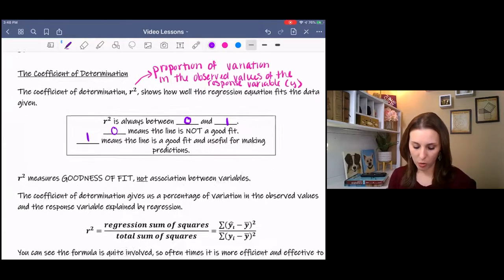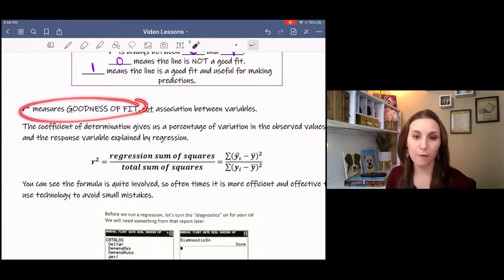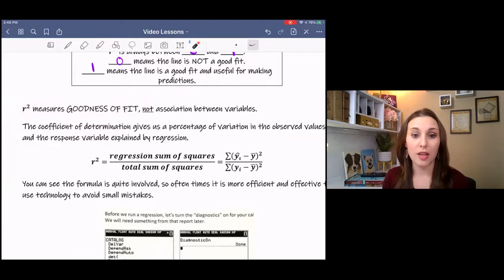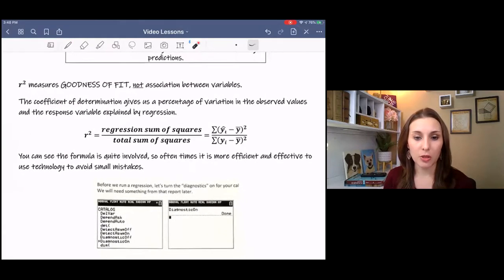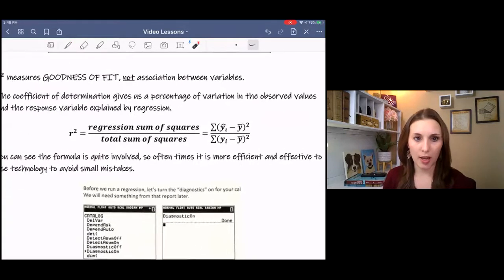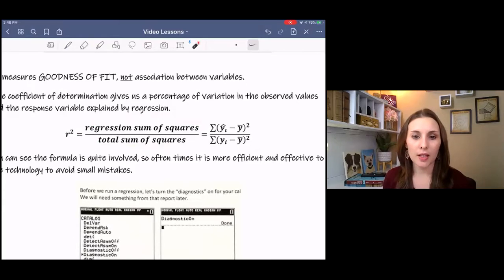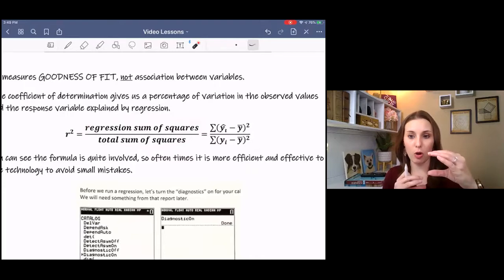So r squared measures goodness of fit. That's very important. Not the level of association between variables. The coefficient of determination gives us a percentage or proportion of variation, and it is represented by this fraction: regression sum of squares over total sum of squares. You can see it's the part over the whole, which is a percentage when you multiply by one hundred.